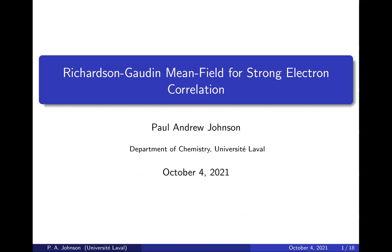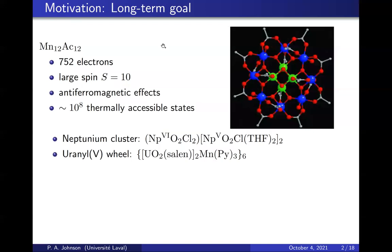So in the long term, we want to be able to predict the behavior of complicated systems that are not treatable by Hartree-Fock plus correction. As an example, we consider this manganese acetate cluster where there are many electrons, a large spin due to coupling between different behaviors of the green and blue centers. There are many effects due to antiferromagnetic coupling, and because there are many electrons with lots of near degeneracy, there are many thermally accessible states that are important.